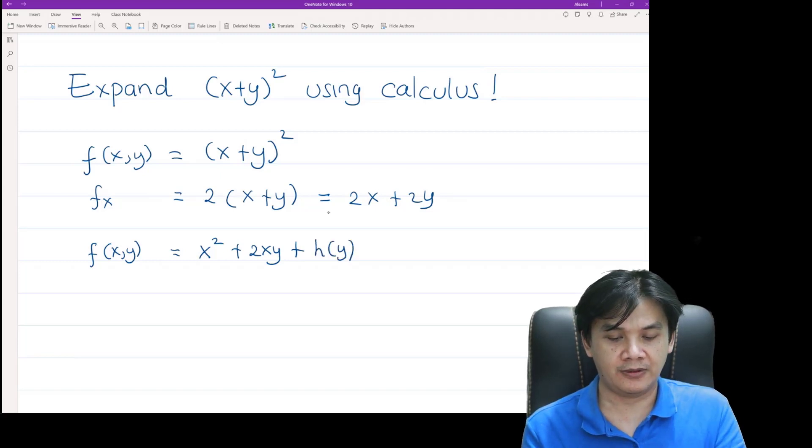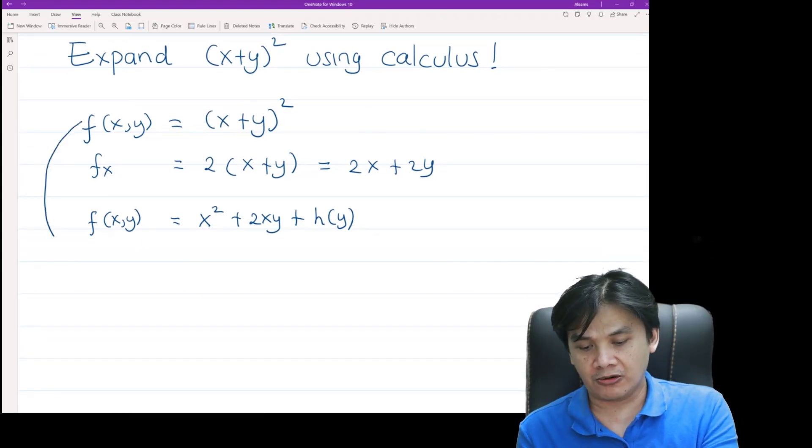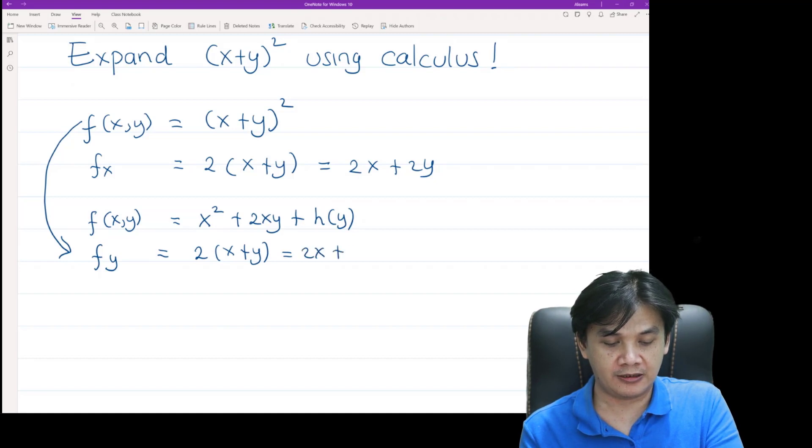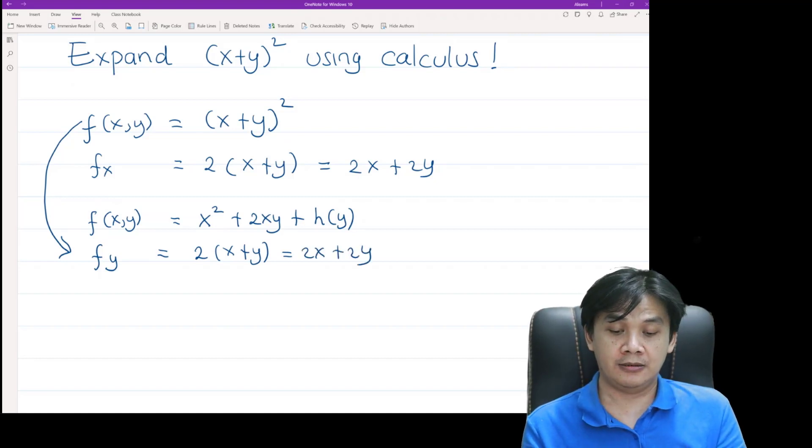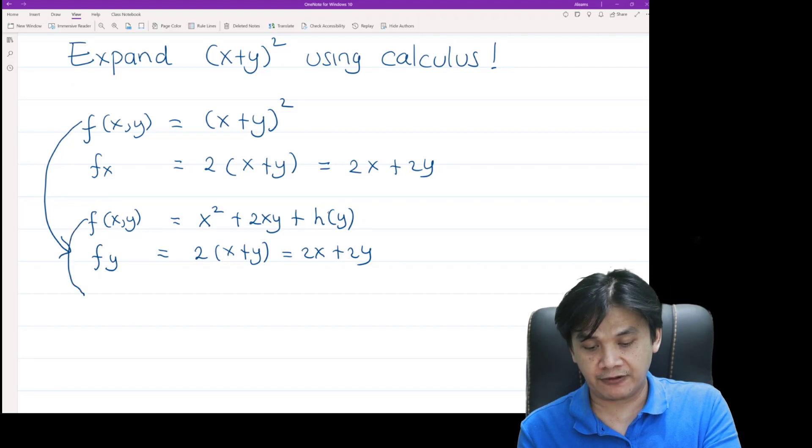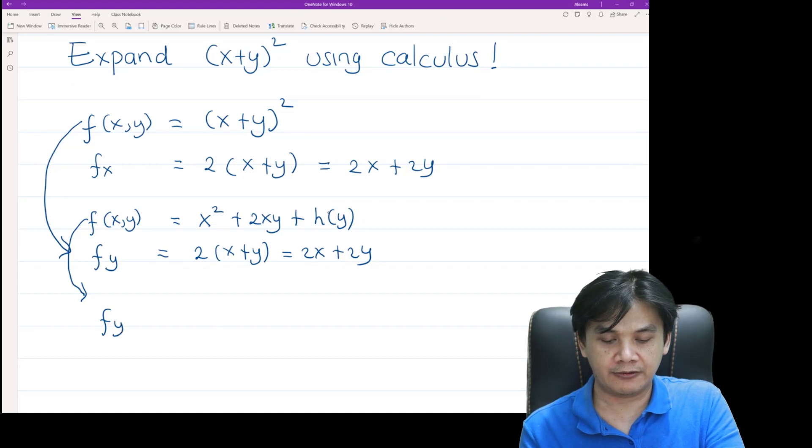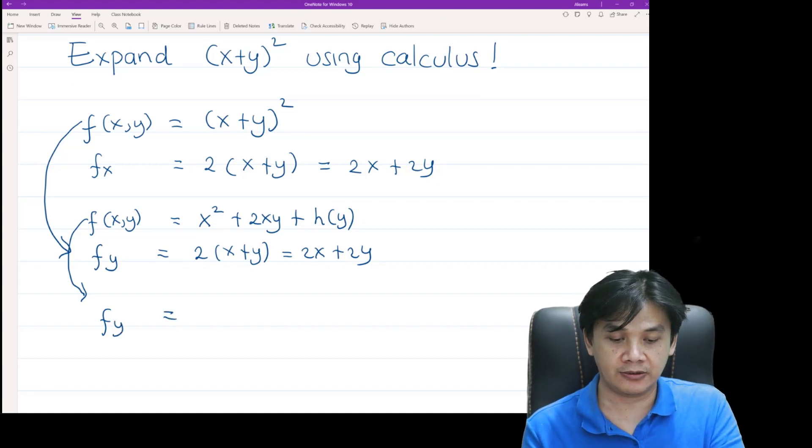Now, if we're using the original definition of f, we have f_y is also twice of (x+y), which is 2x + 2y, right? But if we use this definition of f, then the partial derivative of f with respect to y is equal to—the derivative of x² is zero, the derivative of 2xy is 2x, and the derivative of h is h'(y).